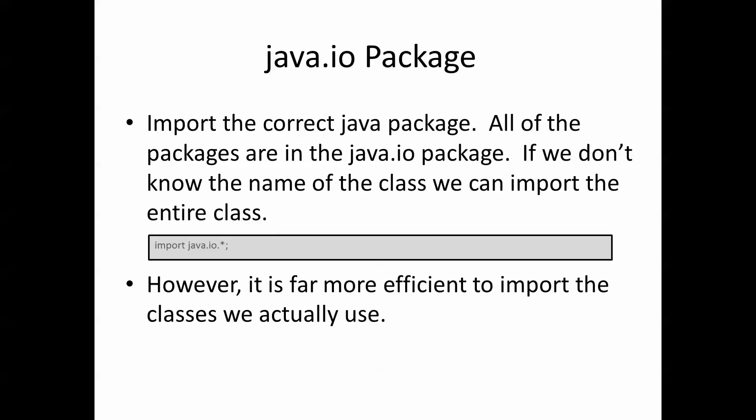As with most things in Java, we also need to know where to find the classes and the functionality that we are going to need. In this instance we need to make sure we import the java.io package. All of the classes we need are in the java.io package, and if we want to import all of them together we do import java.io.*. But it's more efficient to import just the classes we want, and we'll see what they are as we move along.